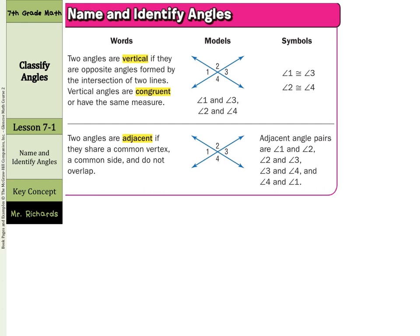Two angles are vertical if they are opposite angles formed by the intersection of two lines. Vertical angles are congruent, or have the same measure. Looking at the diagram, angles one and three are vertical — here's angle one, and here's angle three. Those two are vertical.